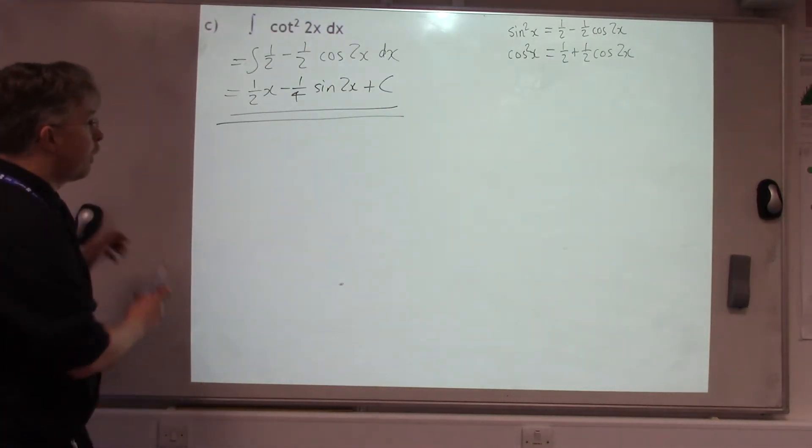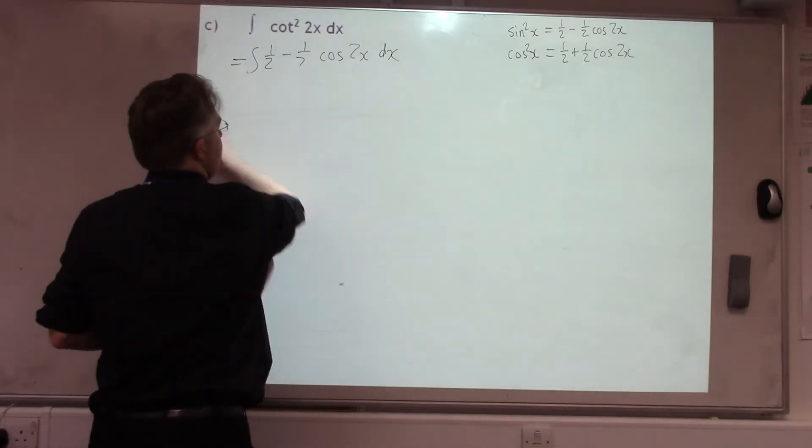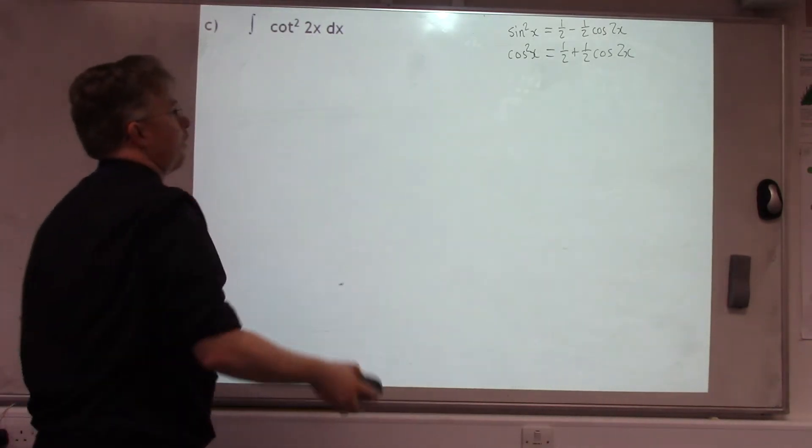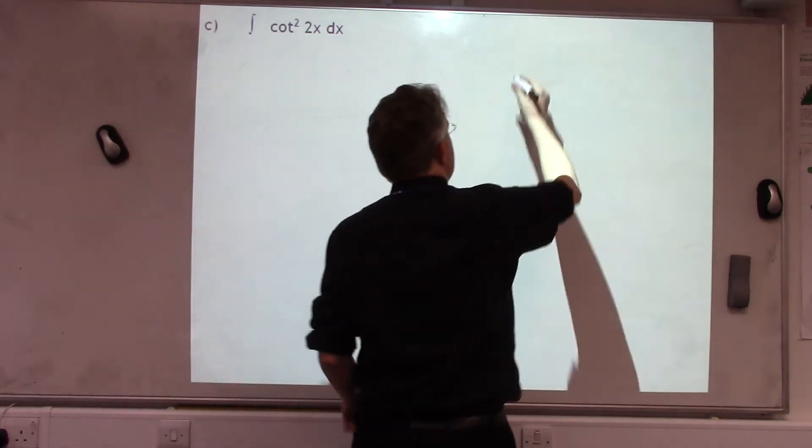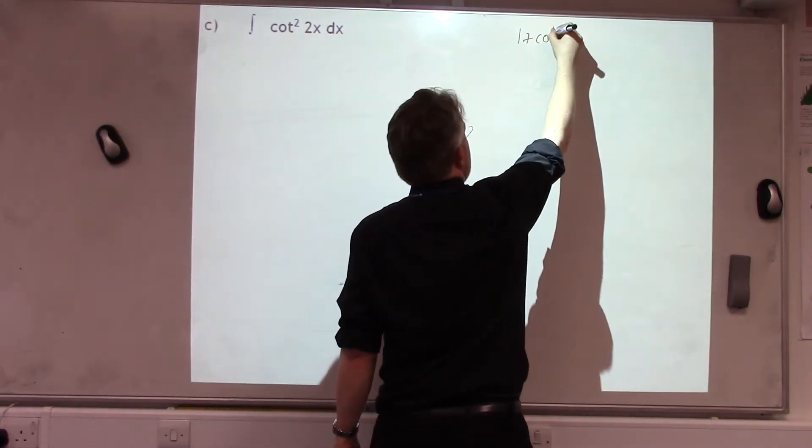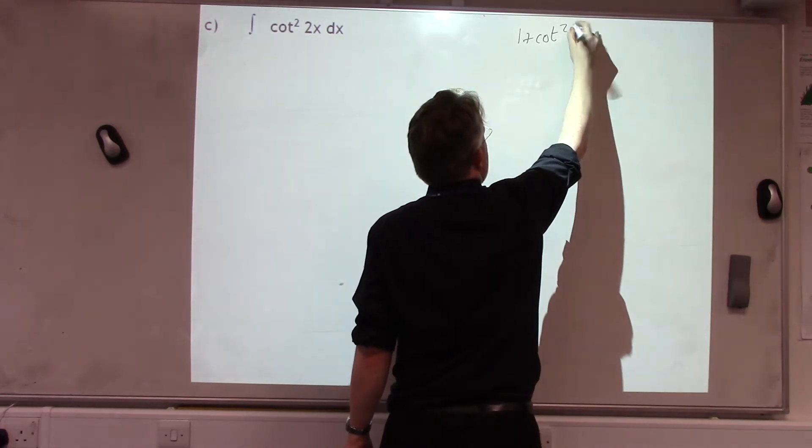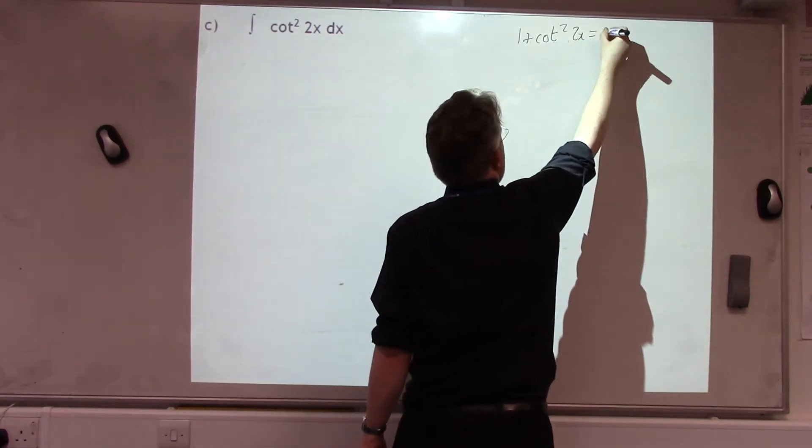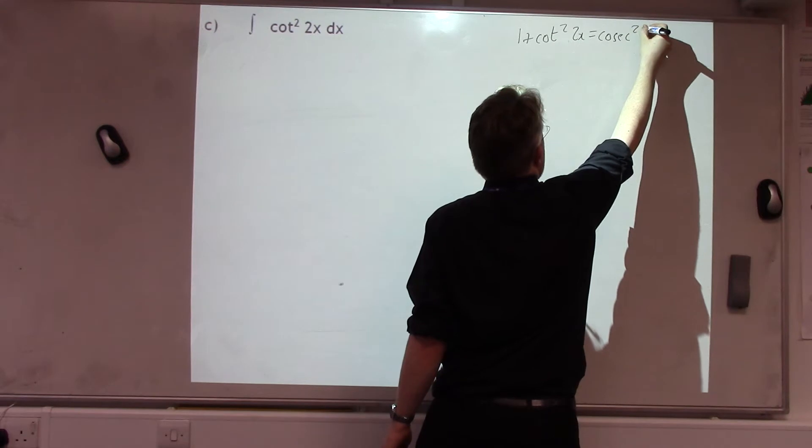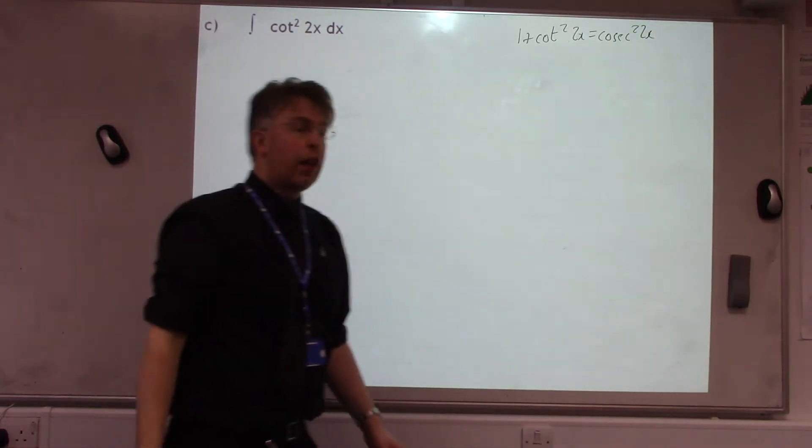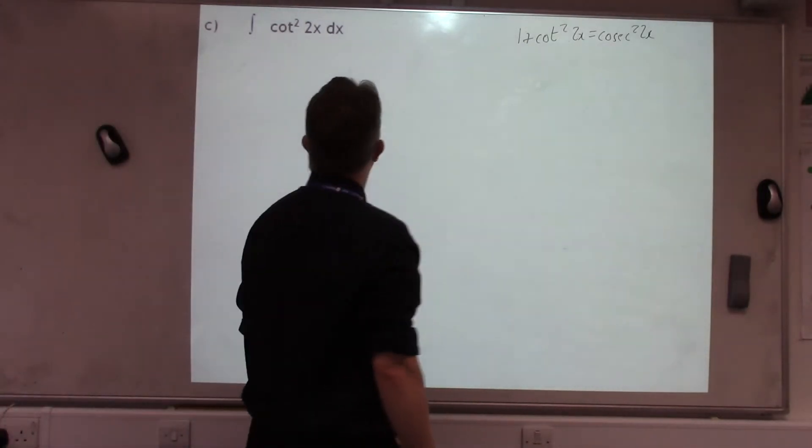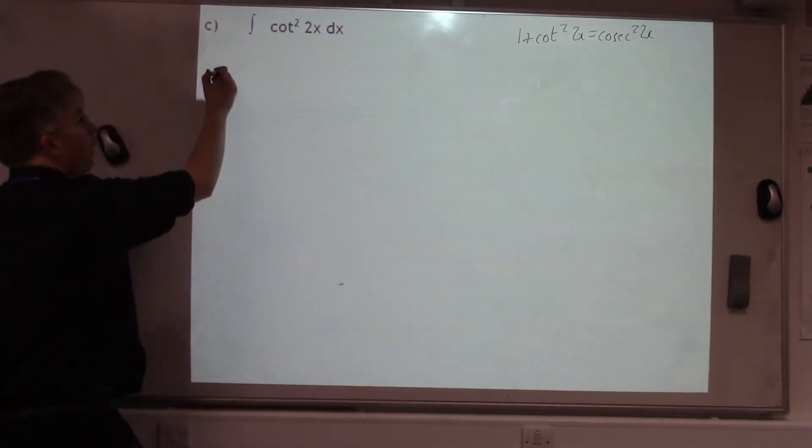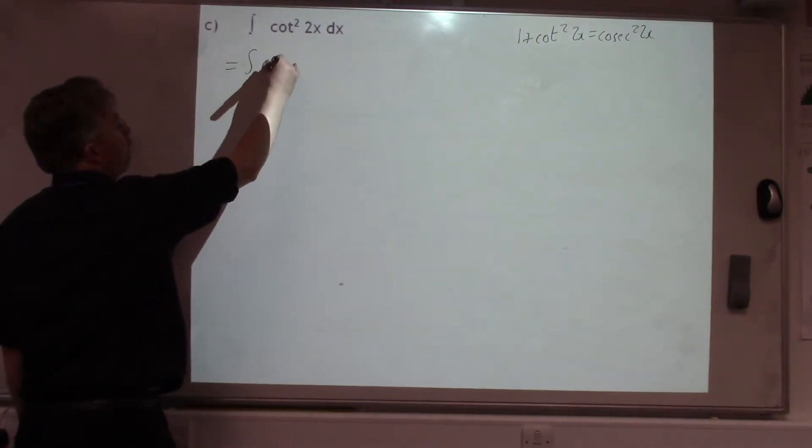Cot squared 2x, less common. The identity is 1 + cot² = cosec². For 1 + cot²2x = cosec²2x. So, we can replace cot squared with cosec² - 1.